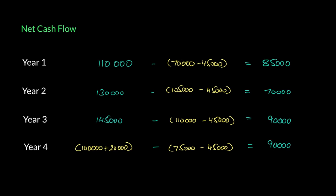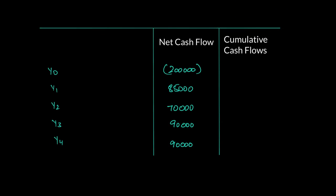Using the net cash flows, we have to find the payback period. Draw a table — you should get used to drawing this. Year zero is your investment year, making a £200,000 investment, and against that you receive net cash flows in years one, two, three, and four. The payback period answers a very simple question, and this is one of the easiest methods to learn — when will the firm recover its £200,000?